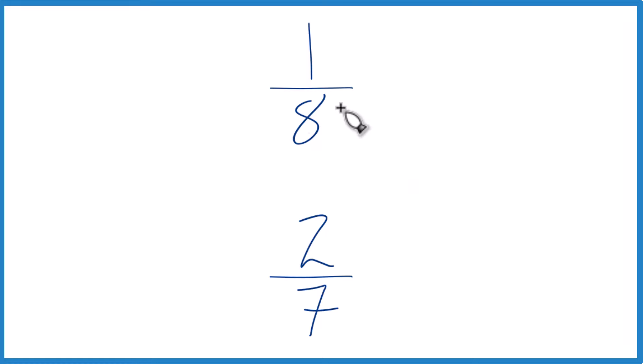The other way is to find a common denominator. Right now we have 8 and 7, but if we had the same denominator, we could just compare the numerators. That would tell us which fraction's bigger.